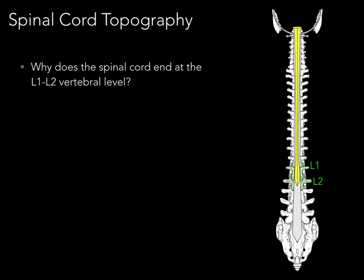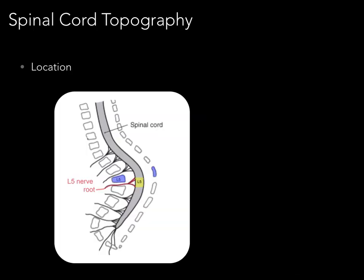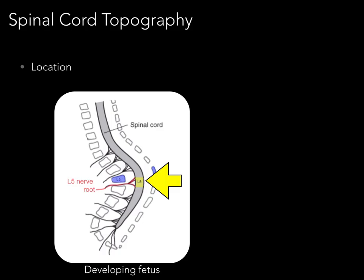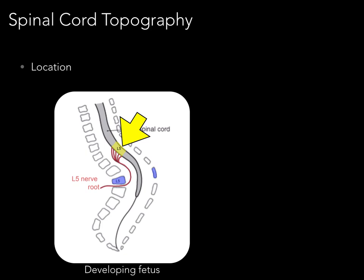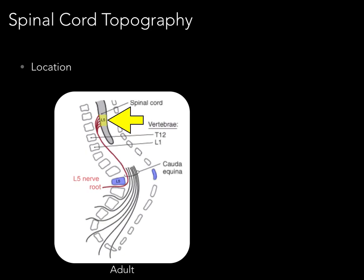This begs the question: why does the spinal cord end at the L1-L2 vertebral level? To describe this, we look at a developing fetus illustration showing the spinal cord within the vertebral canal with associated vertebrae on either side. The L5 spinal cord level gives rise to the L5 nerve root, which courses below the L5 vertebra. This highlights the vertebral segmental discrepancy that occurs because the vertebral column and the spinal cord develop at different rates. The spinal cord develops at a slower rate, so at birth and in the adult, the L5 spinal cord level is located at a more superior level than its associated L5 vertebral level. The nerve root always courses below its associated vertebra.